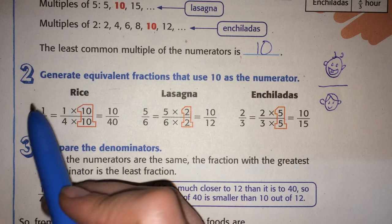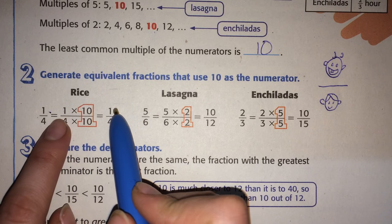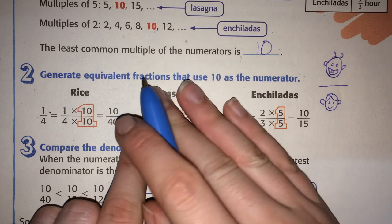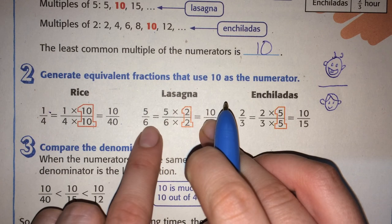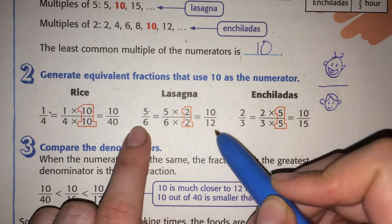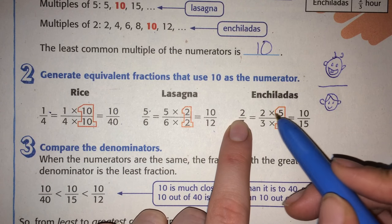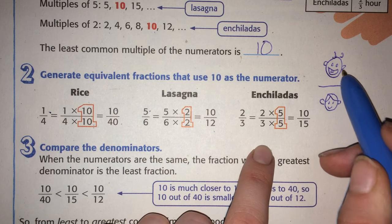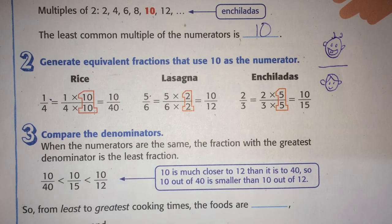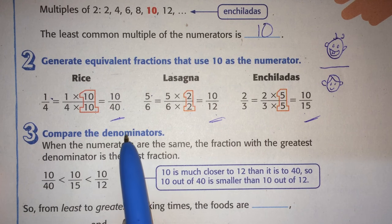So I can multiply so that they'll all be ten on top. So one changing to ten. Then I have to multiply the bottom by ten, so it's forty. And I'm going to try to change five-sixths to be ten on top. So I have to multiply by two and multiply on the bottom, so that makes it ten-twelfths. And to get two to turn into ten, I have to multiply by five. But remember, if you multiply by five here, you have to multiply by five here. So that's fifteen. So now I have these equivalent fractions. Ten-fortieths, ten-twelfths, and ten-fifteenths. And now I can compare.